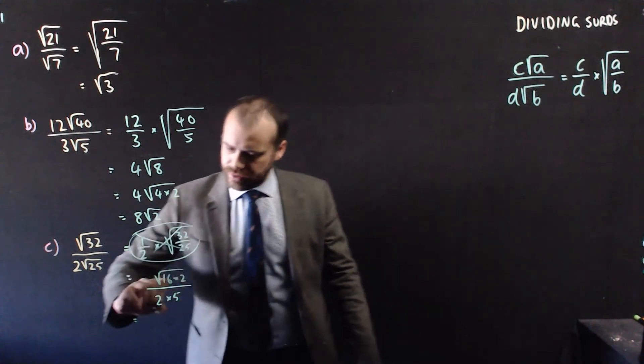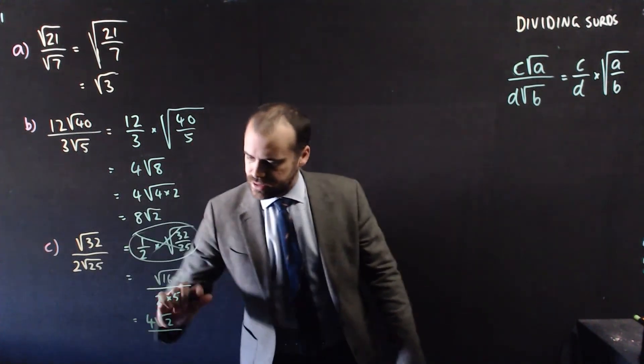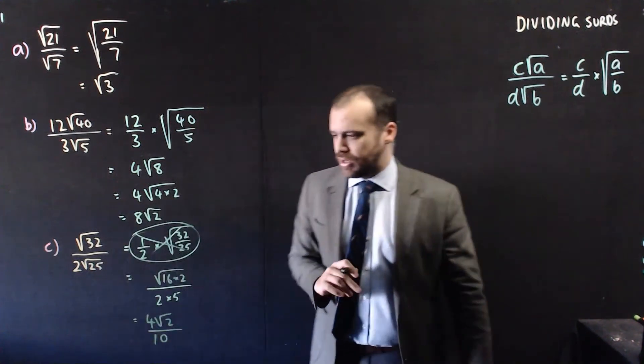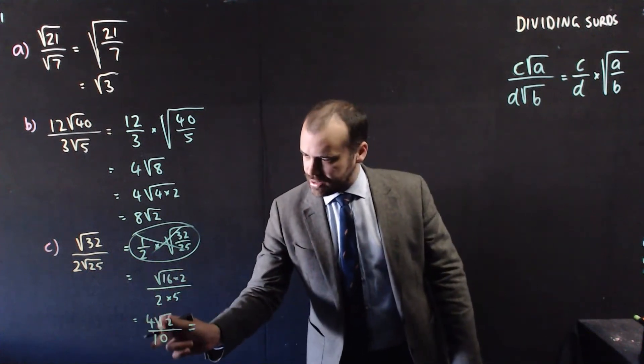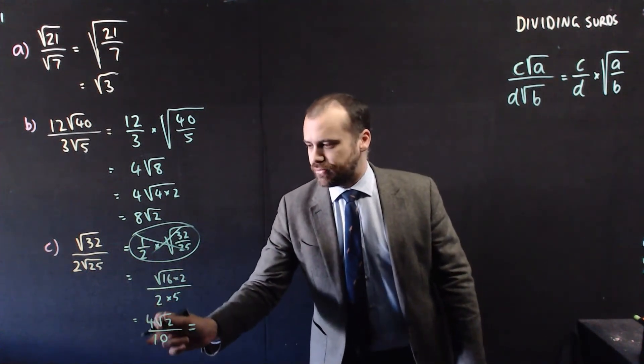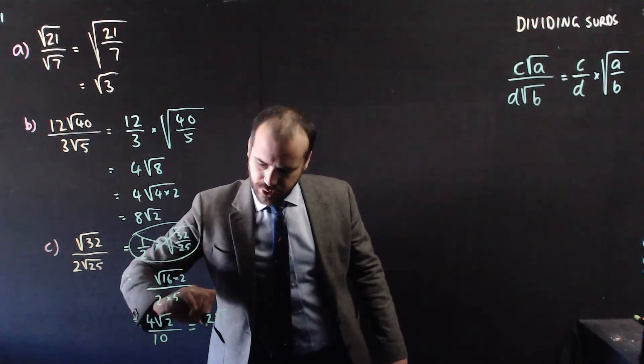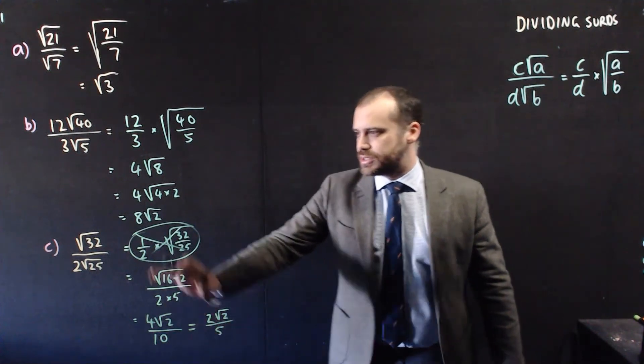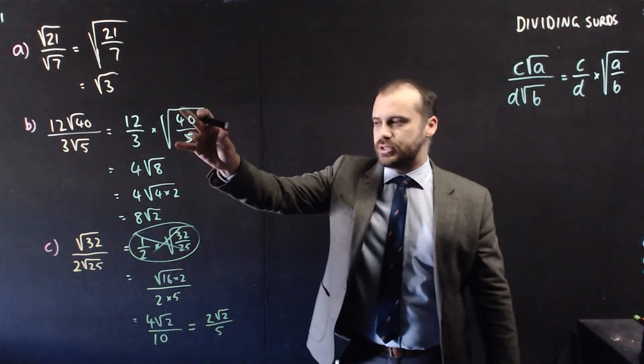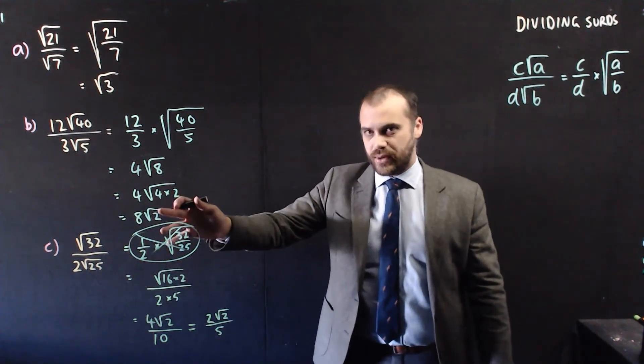So what do I get here? I get the 16 coming out the front for root 2 over 10. That's pretty good, but I can simplify just a little bit further. That 4 and that 10, we can simplify. We can divide them both by 2, so I get 2 root 2 over 5. So sometimes it's a good idea to put them under a single square root, but if you can simplify them first, it's a much better idea to go that way.